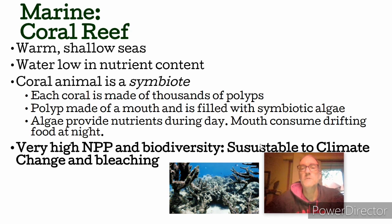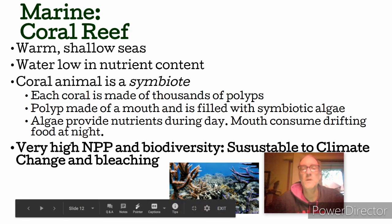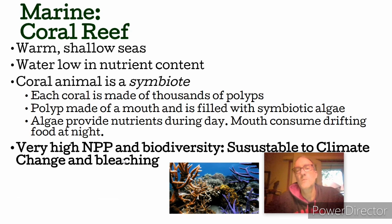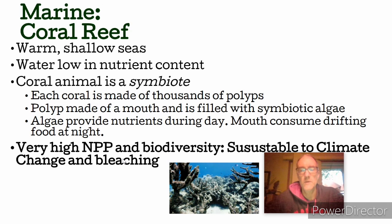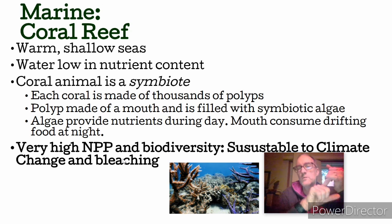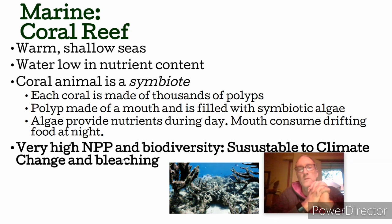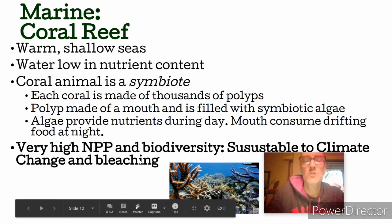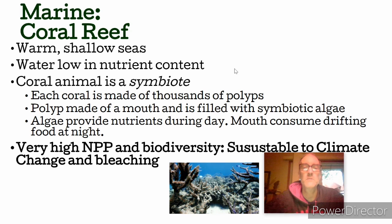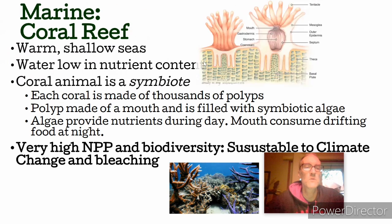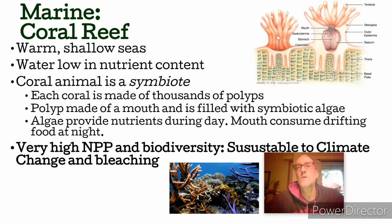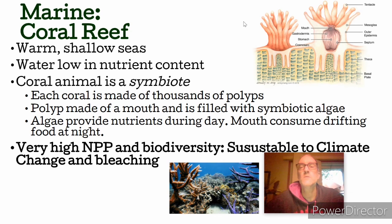Coral reefs are susceptible to climate change and bleaching, as shown in this image. Because of things like ocean acidification — too much CO2 getting into the water and producing acids — and climate change itself, coral can eject its symbiont. Once coral dies like this, it's very difficult for it to come back. We're going to be talking about the major threats to coral reefs in future lessons. Here's a picture showing what the coral animal looks like and its structure — it looks similar to a sea urchin.